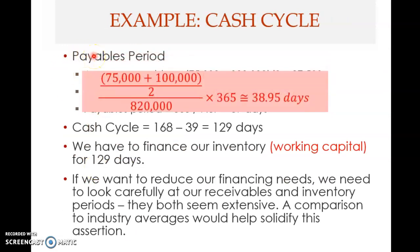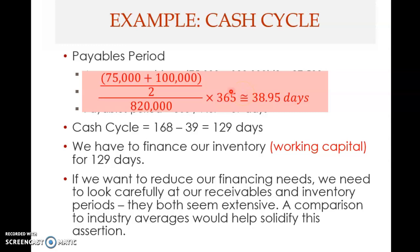We also compute the payable period. The average payable is beginning payables of 75 plus ending payables of 100, divided by two, then divided by cost of goods sold of $820,000, multiplied by 365. This gives about 39 days — meaning the company takes about 39 days to pay its suppliers after purchasing on credit.